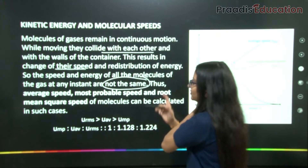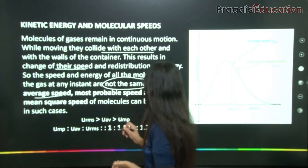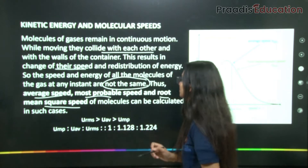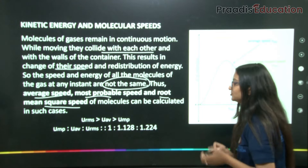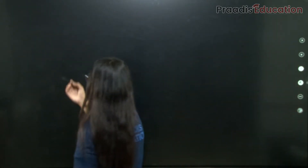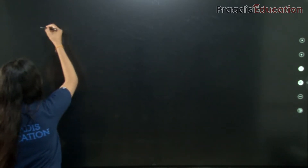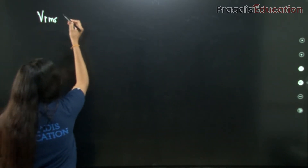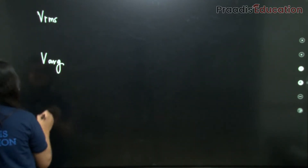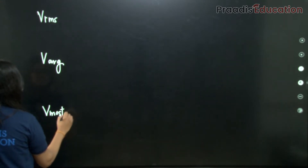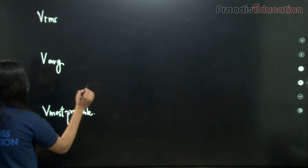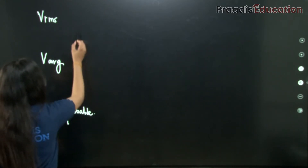So this is how we have the three speeds: average speed, most probable speed, and root mean square speed of the molecules. We can calculate these using their formulas. Let us check out the formula for v_rms, then v_average, and finally v_most_probable.